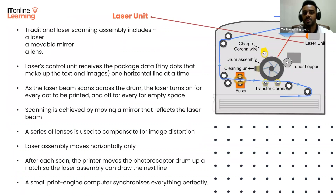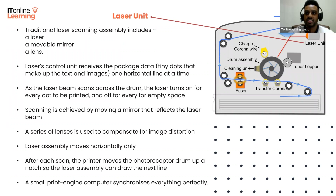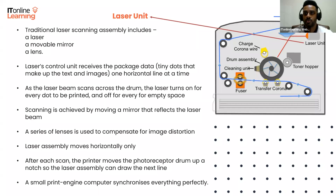Moving on to the laser unit — the traditional laser scanning assembly includes one, a laser; two, a movable mirror; and three, a lens. The laser's control unit receives the page data, which is the tiny dots that make up the text and images, one horizontal line at a time.